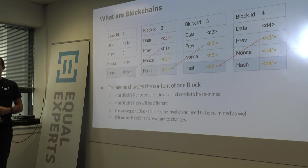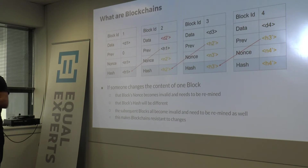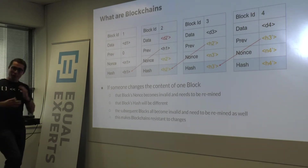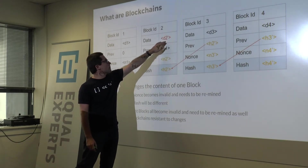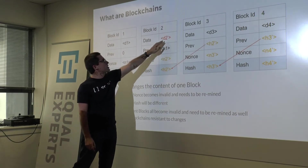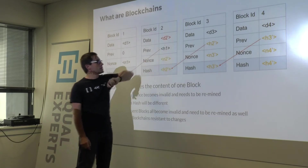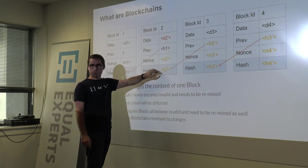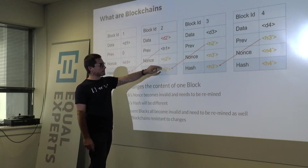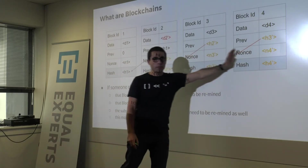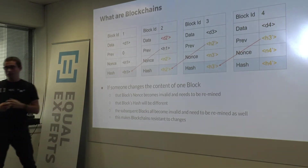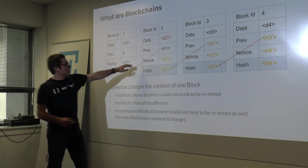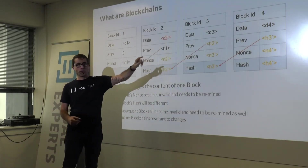If someone changes the content of one block — say the data, which might contain a bunch of transactions — the hash will be different and will no longer follow the rule. So a new nonce must be calculated, and from that block forward, all subsequent blocks become invalid and have to be re-mined. That's how the blockchain resists alterations: by having this chain where the hashes are linked, if you change one, you change everything.